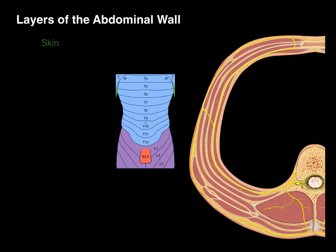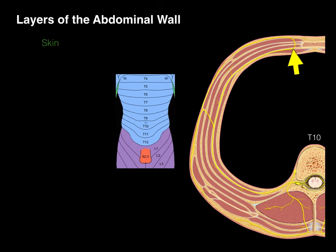Taking a cross-section at the T10 level, we see the ventral ramus coursing between the internal oblique and transverse abdominis muscles all the way to the front, giving rise laterally to a lateral cutaneous nerve. Looking at the dermatome picture, it gives that lateral innervation, and then also an anterior cutaneous branch, which provides innervation down to the central mid-sagittal line. The same thing happens bilaterally, making a belt-like pattern — and there's the innervation of the skin.